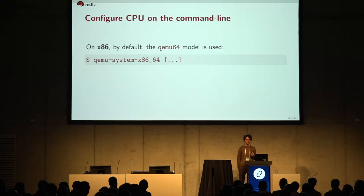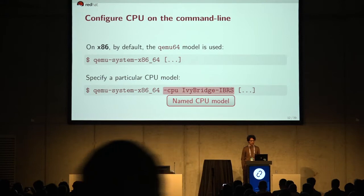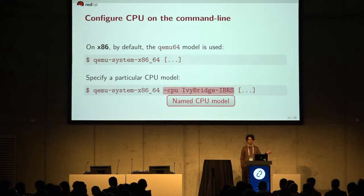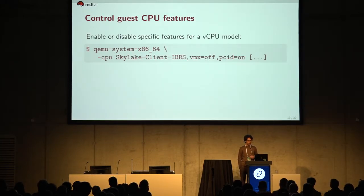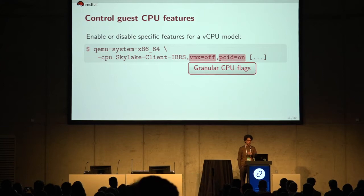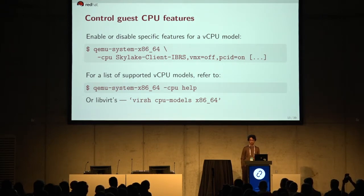The most simple interface for configuring vCPUs is the command line. If you don't provide a CPU option to QEMU, the default is QEMU64. We don't want that, so we provide an explicit CPU model with the -cpu flag followed by a named model like Ivy Bridge or Haswell. Along with named CPU models, you can control which CPU features are exposed to your virtual machine — turning specific flags on or off. To find supported models on your host, refer to QEMU's help or libvirt's virsh cpu-models command followed by the architecture.